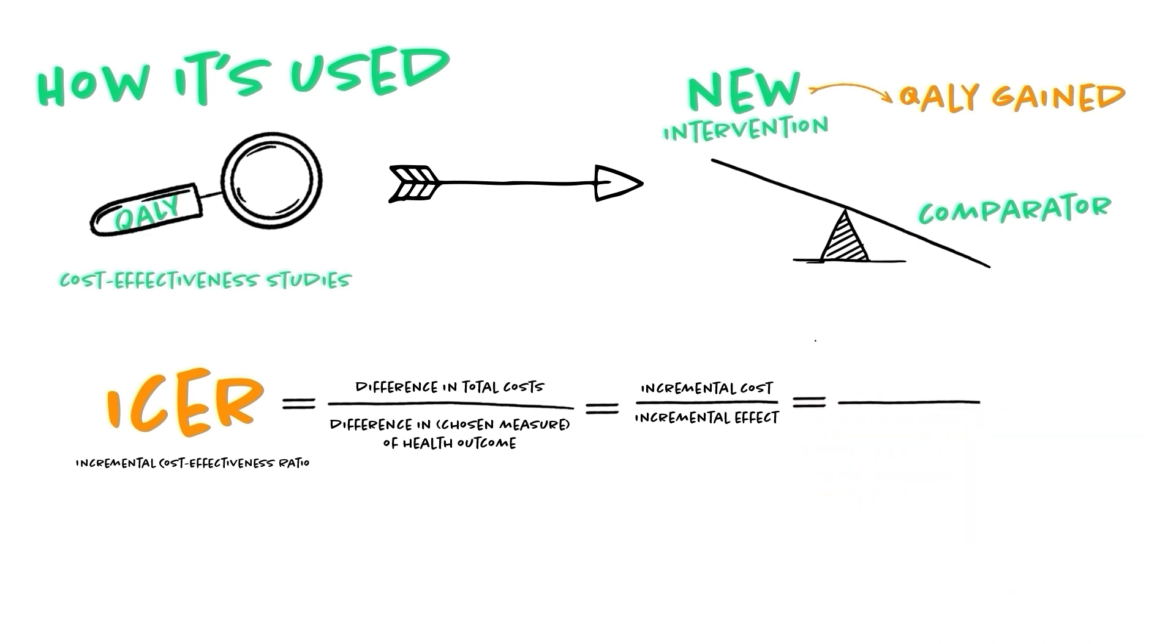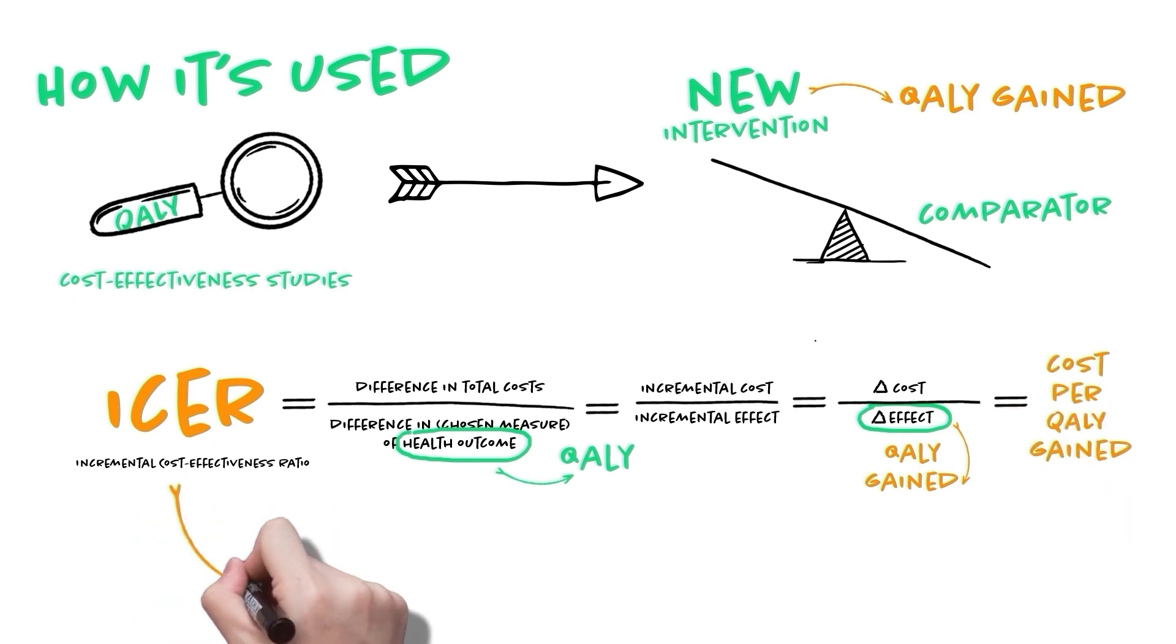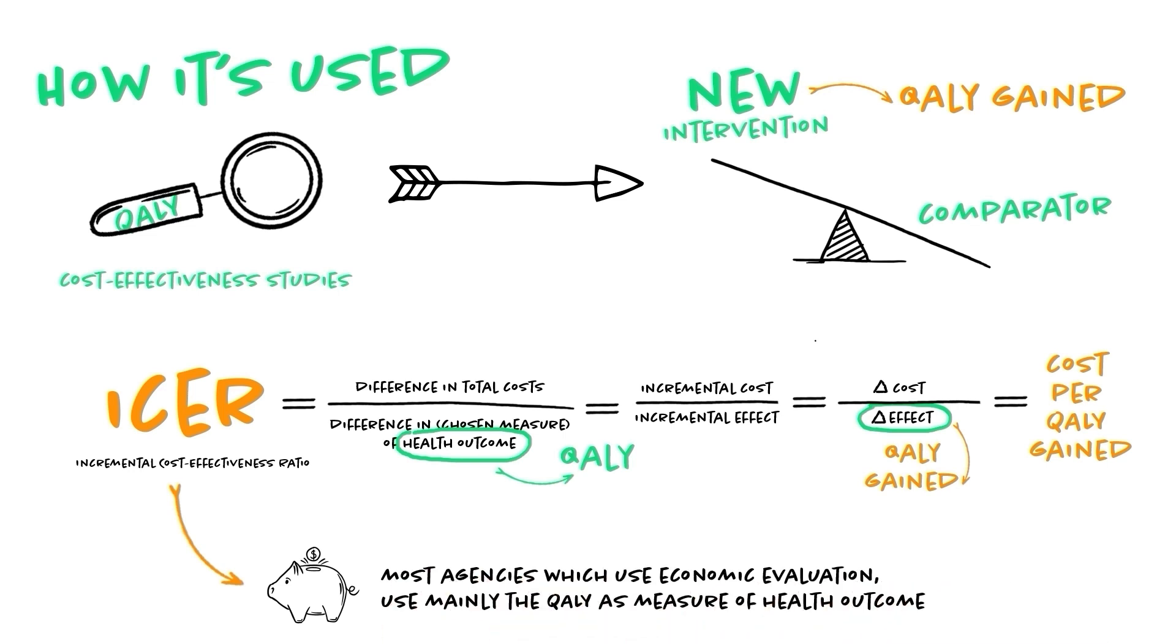Yes, I remember, this ICER is a ratio of extra cost per extra unit of health effect for the more expensive therapy versus the alternative. Well, when the chosen measure of health outcome is the QALY, your denominator is simply the QALYs gained with the new intervention. And this generates a cost per QALY gained. This ICER can then be used to allocate healthcare resources. I guess you know that most agencies which use economic evaluation use mainly the QALYs measure of health outcome, for example NICE.